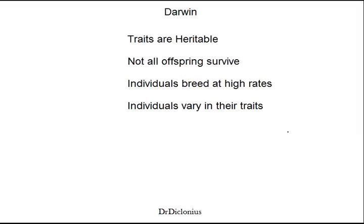But one of the main things that he actually gathered from that was the Galapagos Island finches. And these birds, he noticed, they varied in their beak size. For instance, he would find a bird that had a beak that was sharper and longer, and these were mainly for eating cacti.